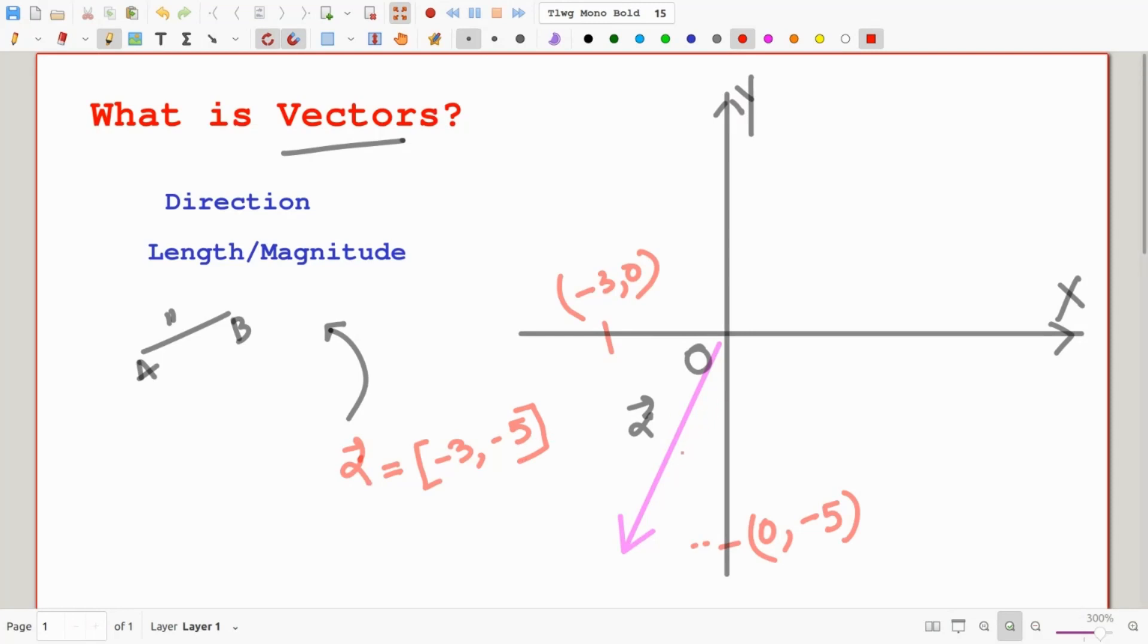Now anyone in the world looking at this vector alpha equal to minus 3, minus 5, can easily go ahead and draw that vector if they want. It is because they know exactly which vector we are talking about. When we write that, just a bit of notation here.